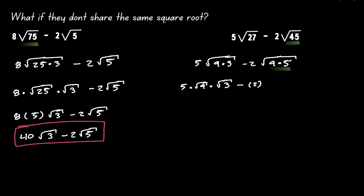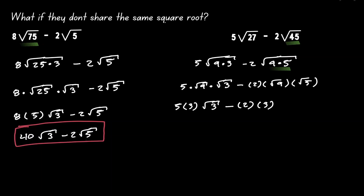We have 2 times the square root of 9, times the square root of 5. Now let's substitute the square root of 9, which is 3. So now we have 5 times 3 times the square root of 3, minus 2 times 3 times the square root of 5. We can multiply those values: 5 times 3 gives us 15, and 2 times 3 gives us 6.